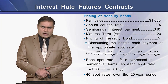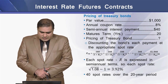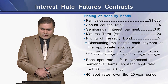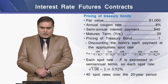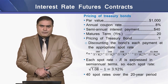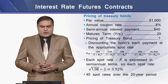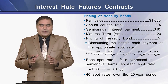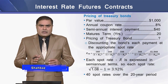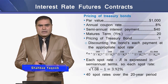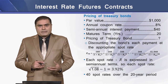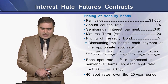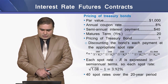Let's discuss the pricing of a treasury bond as a hedge tool. The par value of this bond is $1,000 with an annual coupon rate of 8%, so the semi-annual interest payment is $40 each. The bond has a maturity of 20 years. To price it, we use discounting of each periodic payment and the face value at a certain discount rate — in this example termed the spot rate, denoted as capital R. Each spot rate is expressed in semi-annual terms and equals 3.92%.